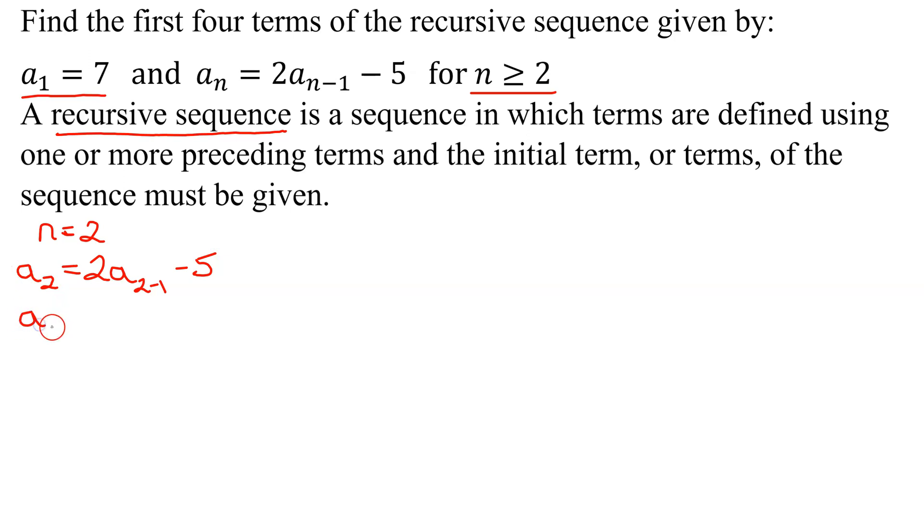Well, what's a sub 2 mean? That just means the second term equals 2 times, well, 2 minus 1 is 1, so that's a sub 1 minus 5. So the second term is just twice the first term minus 5. Are we given the first term? Yes, the first term is 7, so I have 2 times 7 minus 5. 2 times 7 is 14 minus 5, so my second term is 14 minus 5 equals 9.